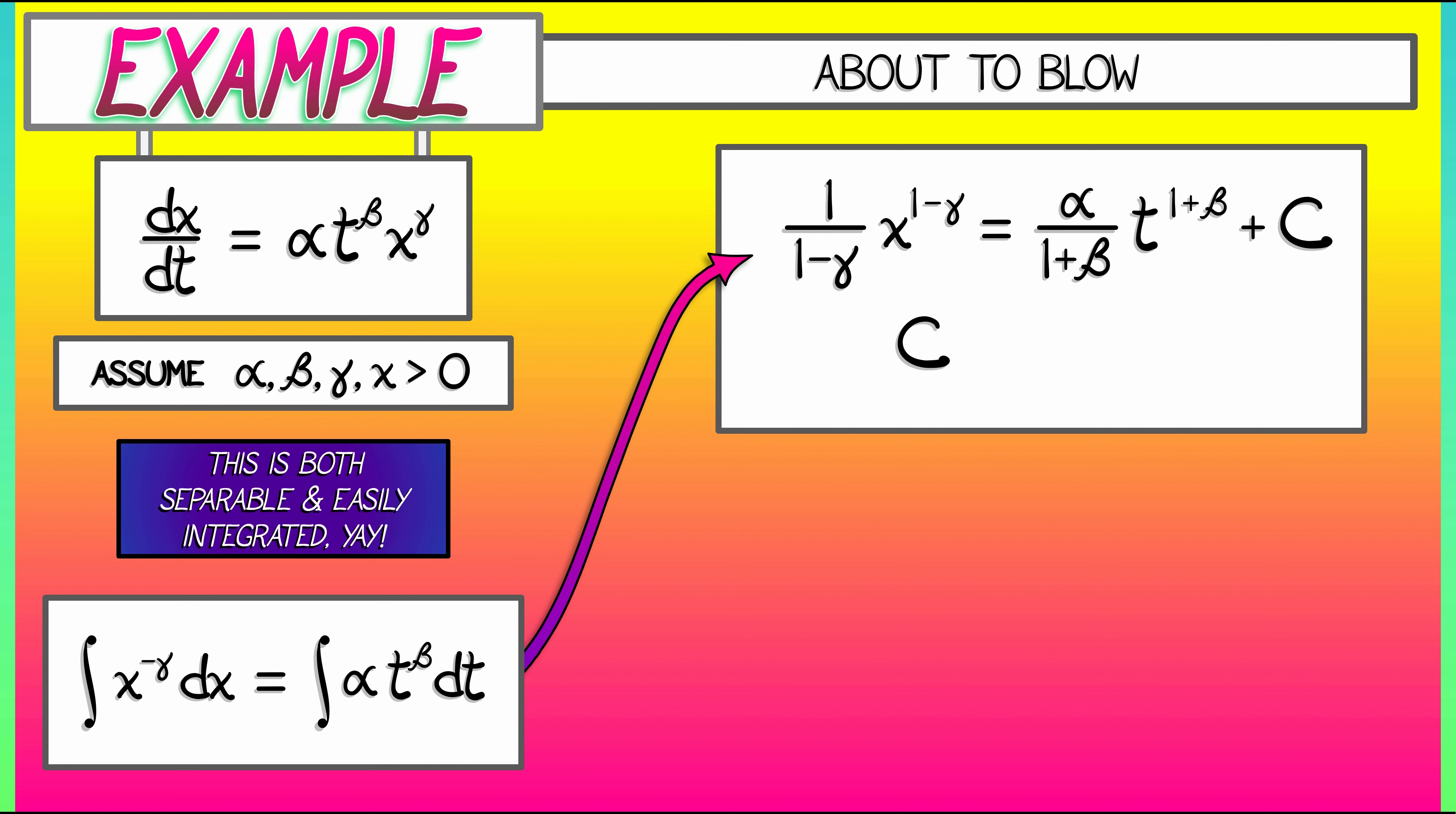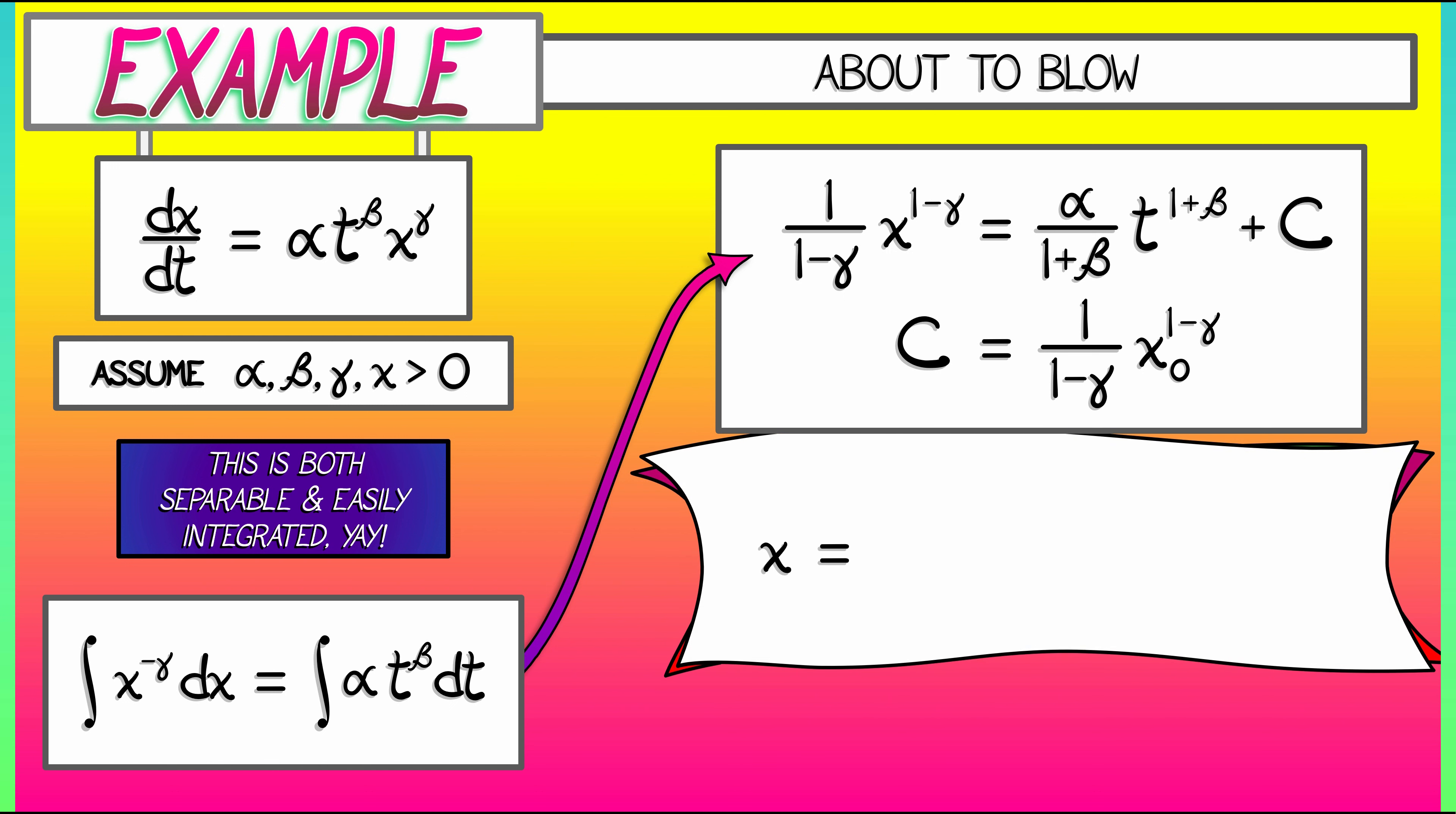What is that constant c? Again, just plug in t equals 0 and the initial condition on x, x naught, and we get that that c is 1 over 1 minus gamma times x naught to the 1 minus gamma. Now, we've got a little bit of algebra to do to solve for x, but multiplying through by quantity 1 minus gamma, and then taking the 1 over 1 minus gamma power, we get x is quantity alpha times 1 minus gamma divided by 1 plus beta t to the 1 plus beta plus x naught to the 1 minus gamma, all of that stuff to the power 1 over 1 minus gamma.